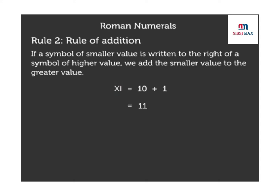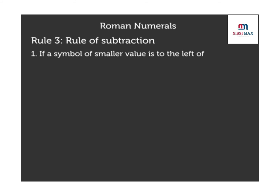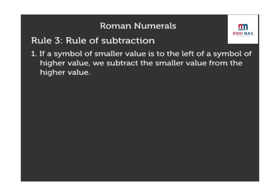Finally, the third rule. Rule 3: Rule of subtraction. If a symbol of smaller value is to the left of a symbol of higher value, we subtract the smaller value from the higher value. For example, let us take the number XC. X has a value of 10 and C has a value of 100, so XC will be 100 minus 10 is equal to 90.